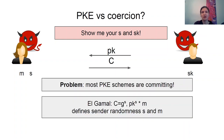Most encryptions are not protecting against this kind of attacks because they are committing. For example, in the El Gamal encryption scheme, the first component of the ciphertext uniquely determines the randomness of the sender, and therefore the sender has no other option than to truly disclose its plaintext and random coins.